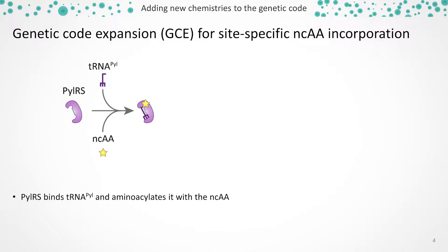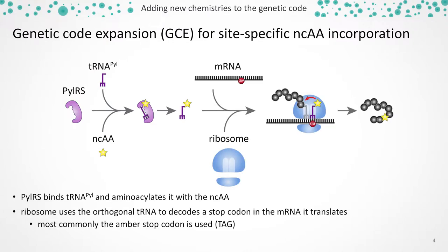Key to this technology are orthogonal tRNA–tRNA synthetase pairs, like the pyrolysine tRNA–tRNA synthetase pair from methanogenic Archaea bacteria. This typically works by recognizing its cognate tRNA and aminoacylating it with a non-canonical amino acid. The anticodon of the tRNA is usually chosen to decode a rare stop codon, like the amber codon, and can then be site-specifically incorporated into the protein of interest. When translated at the ribosome, the non-canonical amino acid is site-specifically inserted into the protein.